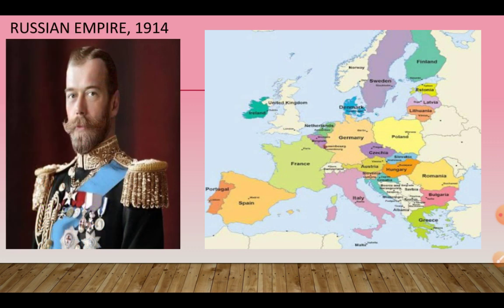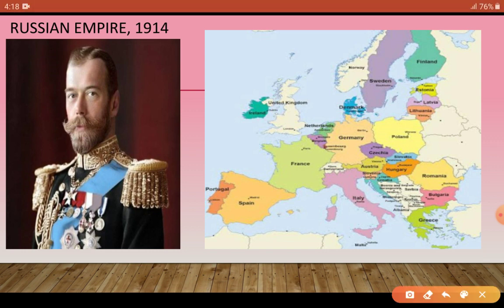Now we are talking about the Russian Empire in 1914. You will know what happened in 1914 — the First World War ended in 1918. When we talk about the Russian Empire in 1914, it was ruled by Russia and extended over a vast area.